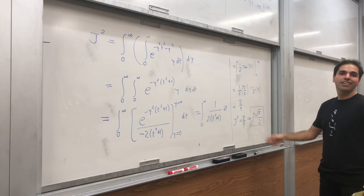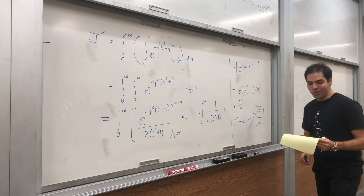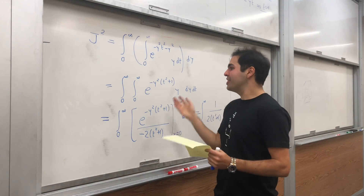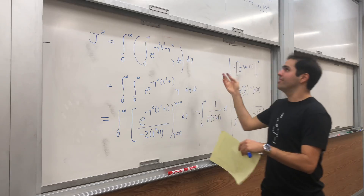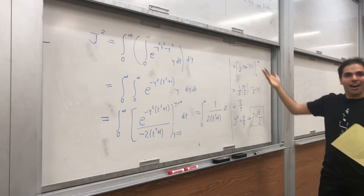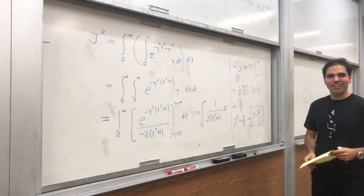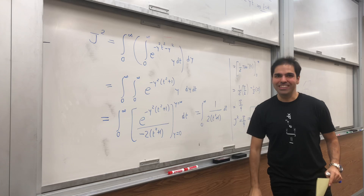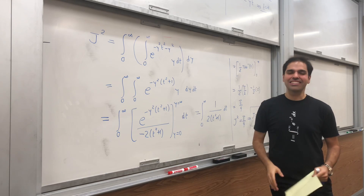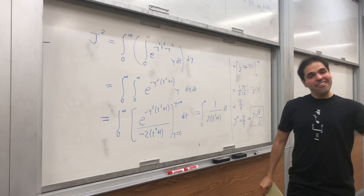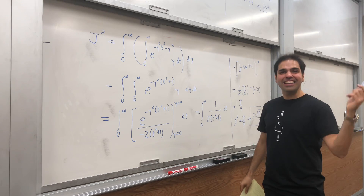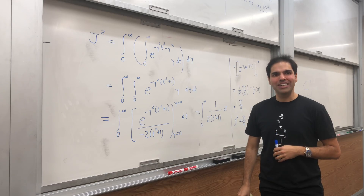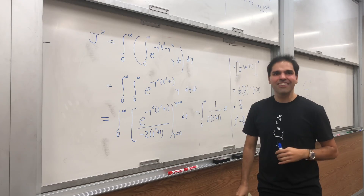If you want the integral over the whole real line, just multiply by 2 and you get the square root of pi. It's a very cute method — another way of computing the Gaussian integral without polar coordinates. There are 10 other ways of doing it, so stick around. If you'd like to see more math, please subscribe to my channel. Thank you very much.